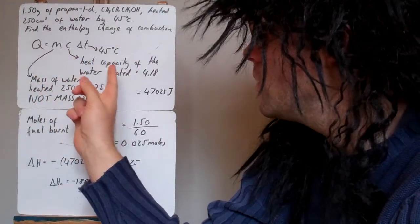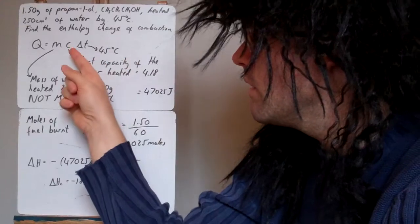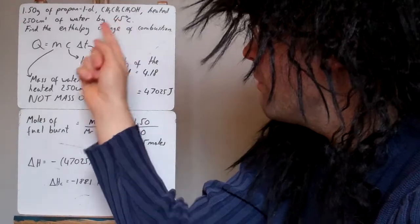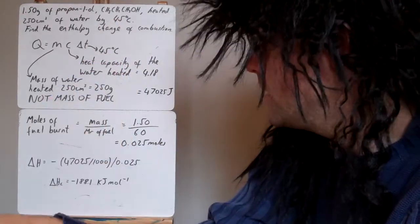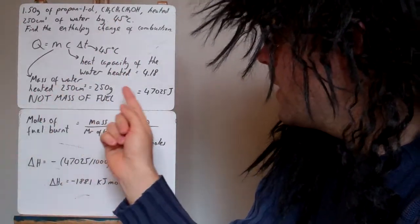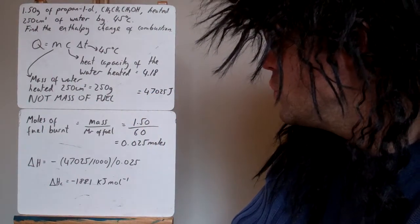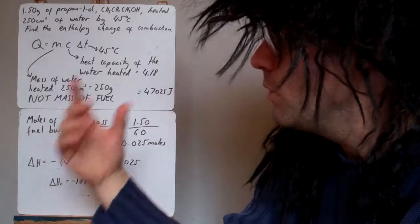Heat capacity of water heated, 4.18 joules per gram per kelvin. That's a constant. And it said it heated it by 45 degrees. So 45 goes in there. So we times them together and we get 47,025 joules. So that's how much energy the water has gained.